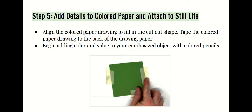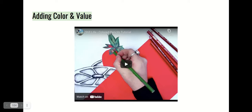Take a piece of colored paper — think about what color your object needs to be. For mine, I chose red paper because I'm making a strawberry. Align the colored paper to fit and fill the cutout shape on the back of your artwork, then tape the colored paper to the back of your drawing. Begin adding color and value to your emphasized object with colored pencils. Let's watch how I add color and value with colored pencils onto my object of emphasis.